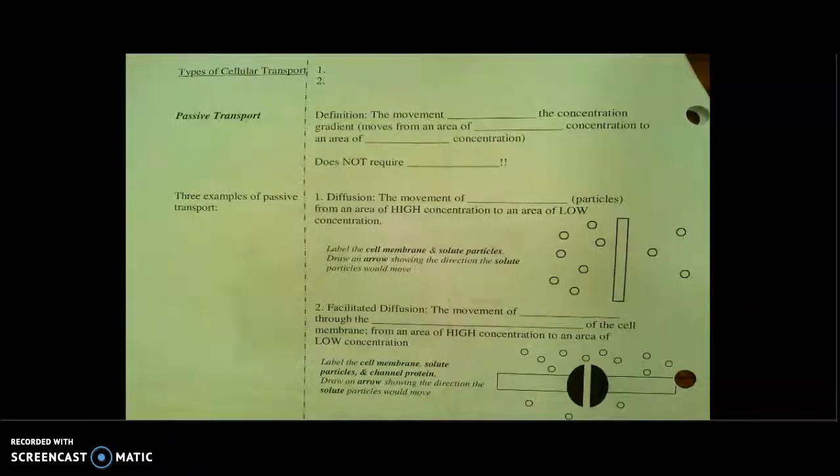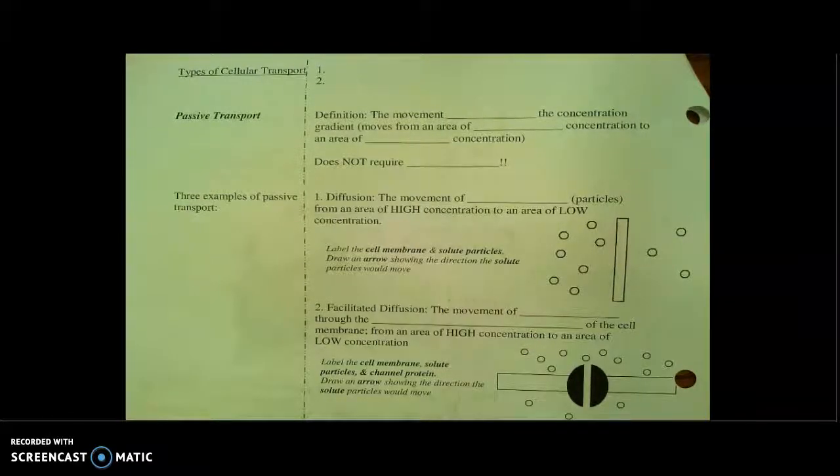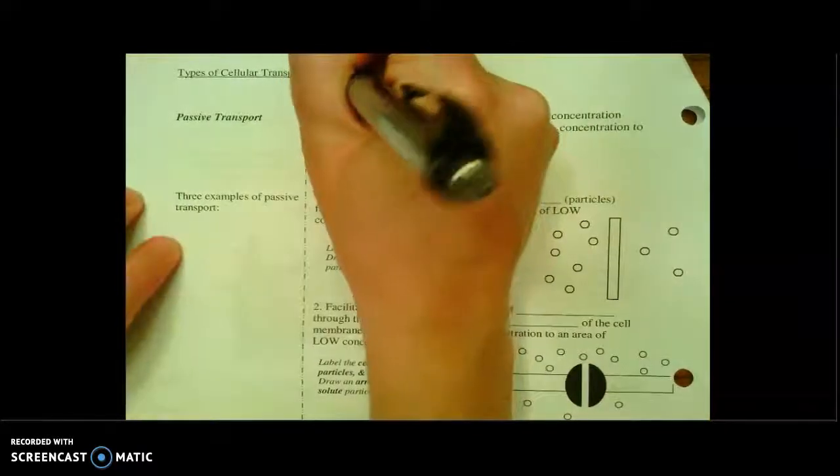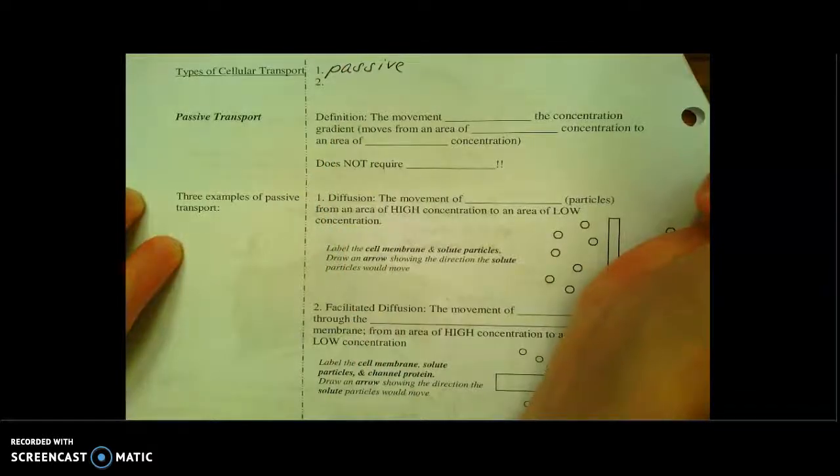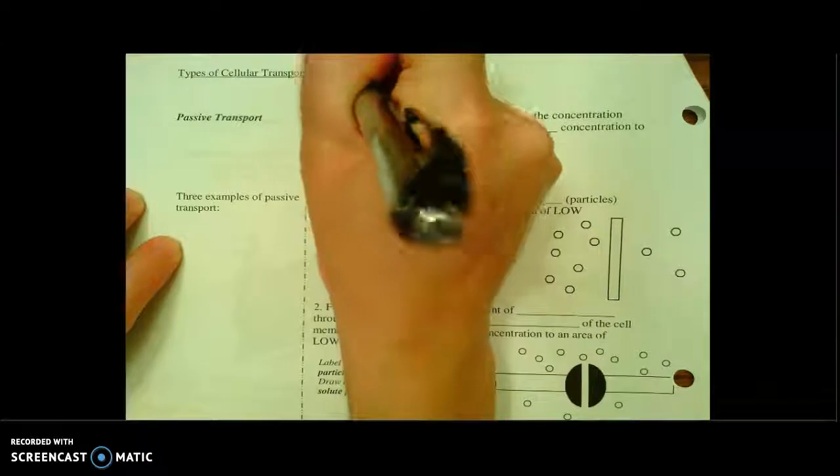If you haven't already done so, go ahead and flip your notes real quick. We're going to be looking at two broad categories of cellular transport. And these can be described as passive and as active.